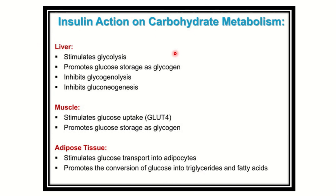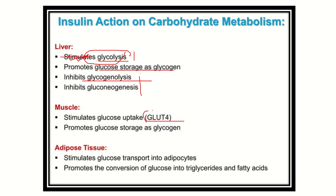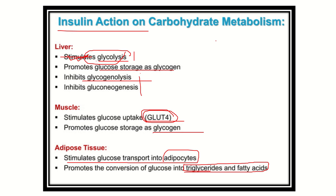Regarding insulin action on carbohydrate metabolism: in the liver and muscle, insulin stimulates glycolysis — the utilization of glucose — promotes glucose storage as glycogen, and inhibits glycogenolysis and gluconeogenesis. In muscle, insulin stimulates GLUT4 receptors, causing more glucose entry. It also promotes glycogen synthesis. In adipose tissue, insulin stimulates glucose transport, storage as triacylglycerol and fatty acids. Insulin also acts on protein and fat storage.